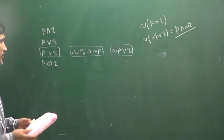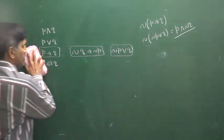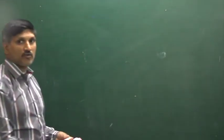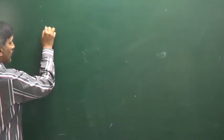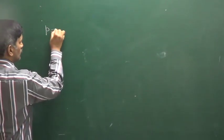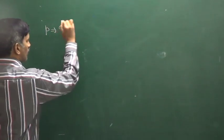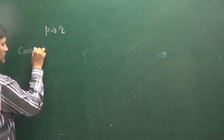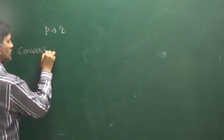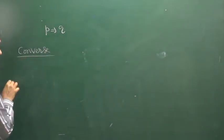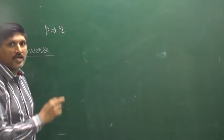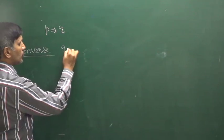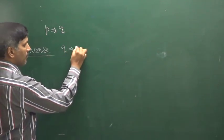So this class, we are going to continue with this type of information. The first one we are going to discuss is: for the statement P implies Q, what is the converse? The converse statement is Q implies P.